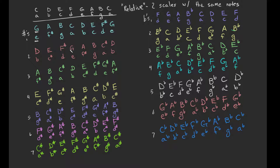If you wanted to figure out what your relative minor was based off of a major scale, there's a shortcut — all you have to do is look at number six in the scale. In G major: one, two, three, four, five, six — number six is E, and our relative minor is E. Same thing in C major: one, two, three, four, five, six — our sixth is A, and our relative minor is A. For G flat major: one, two, three, four, five, six — G flat major's relative minor is E flat minor.